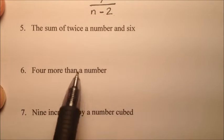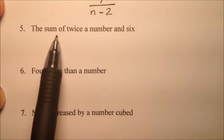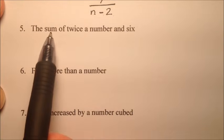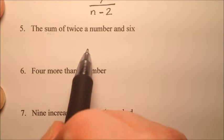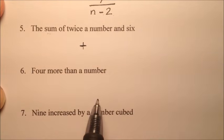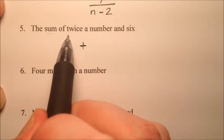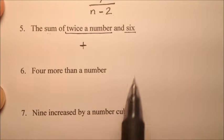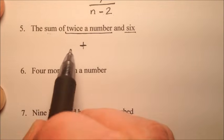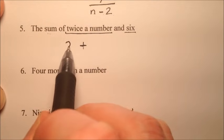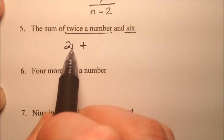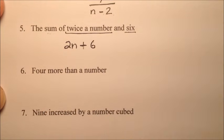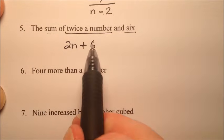Number five says the sum of twice a number and six. Sum means we're going to add. We're adding twice a number and six. Twice a number is two times that number, so we have two n plus six.